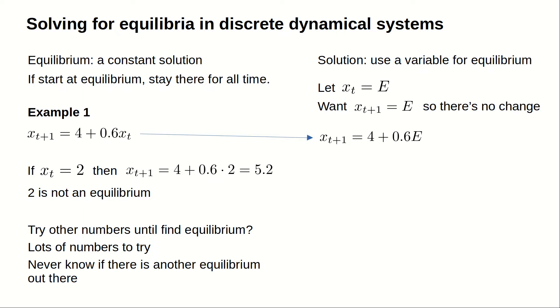For our example, plugging in E for x sub t gives x sub t plus 1 equals 4 plus 0.6 times E. For E to be an equilibrium, we need the value of x sub t plus 1 to be E.